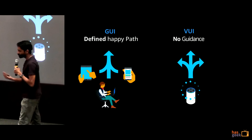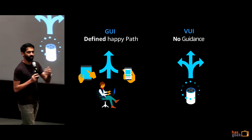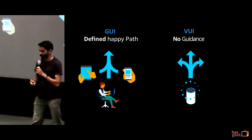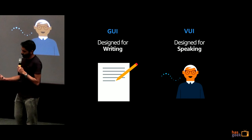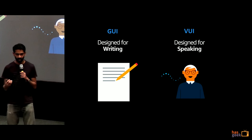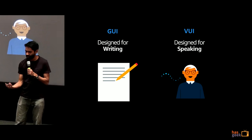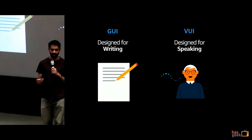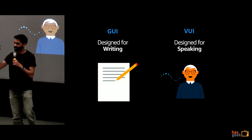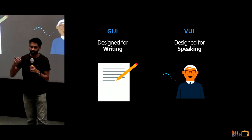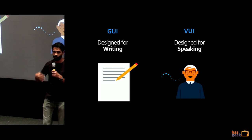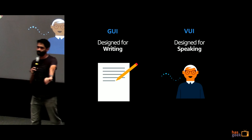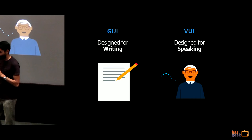With voice there's no such guidance. You can hint at the user, but at the end of the day the user can say whatever they want — so it's up to you to figure out what to do. Also, all the words on a graphical user interface are designed for reading, whereas on voice you're designing for speaking. A good example outside of tech is Harry Potter — the dialogues in the books are very different from what you hear in the movies, because how we read a dialogue versus what's said cinematically is quite different.